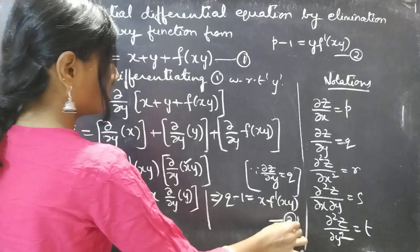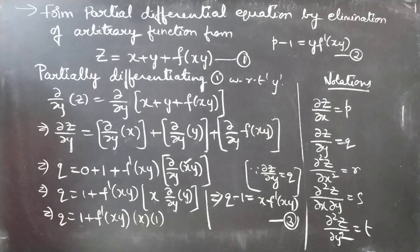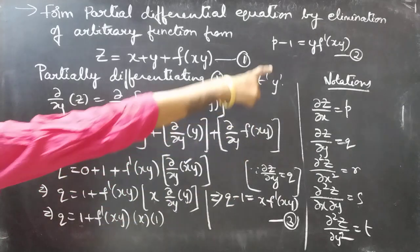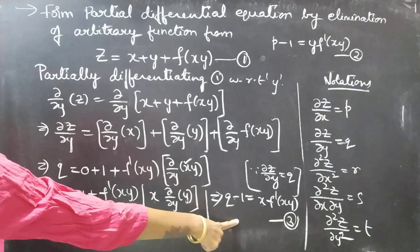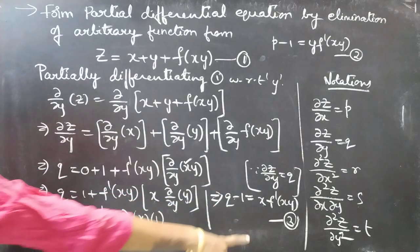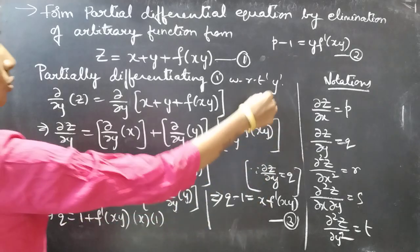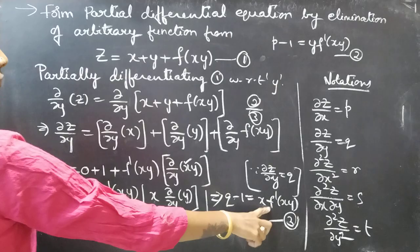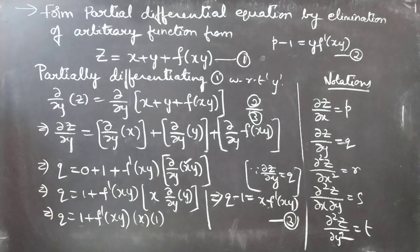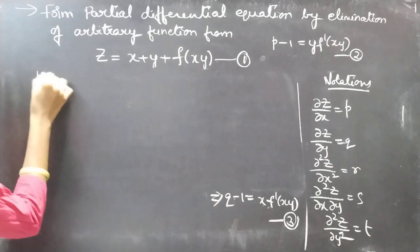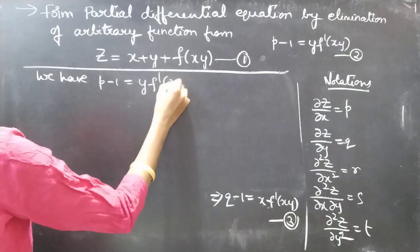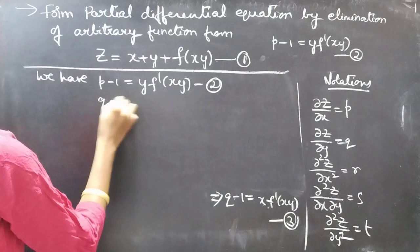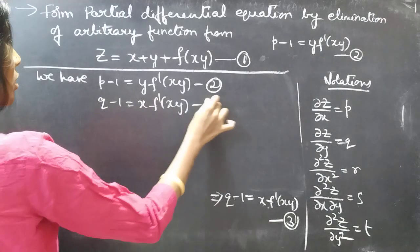Consider this as equation number 3. Now observe equations 2 and 3: in equation 2 we have p − 1 = y·f'(xy), and in equation 3 we have Q − 1 = x·f'(xy). So if we divide equation 2 by equation 3, f'(xy) gets removed.